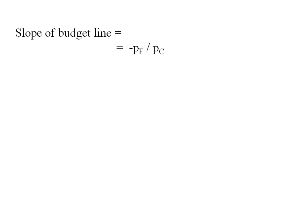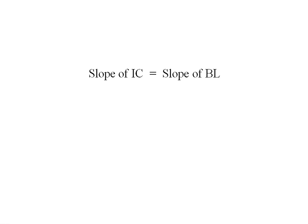The slope of the budget line is the negative of the price of food divided by the price of clothing. The price of food is $1 and the price of clothing is $2. Setting the two slopes equal: −(C + 10) / F = −1/2. The negative signs cancel, and cross-multiplying gives us 2C + 20 = F.